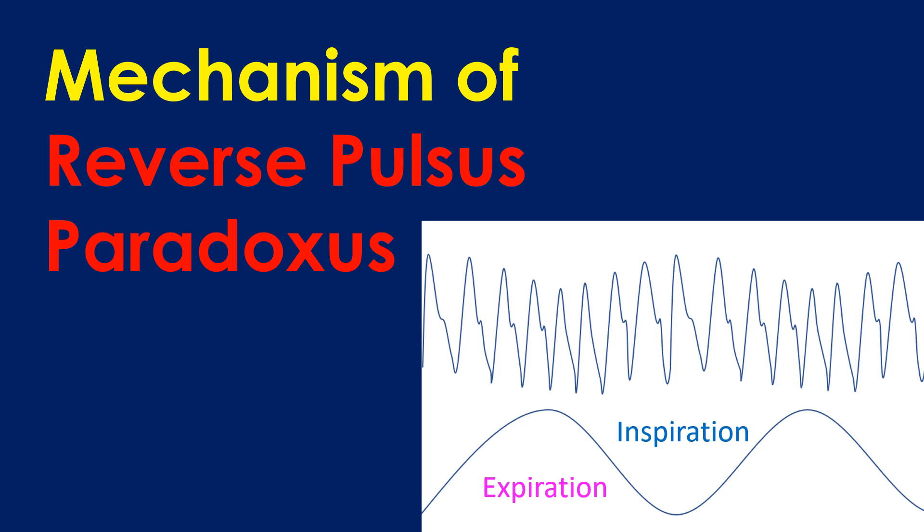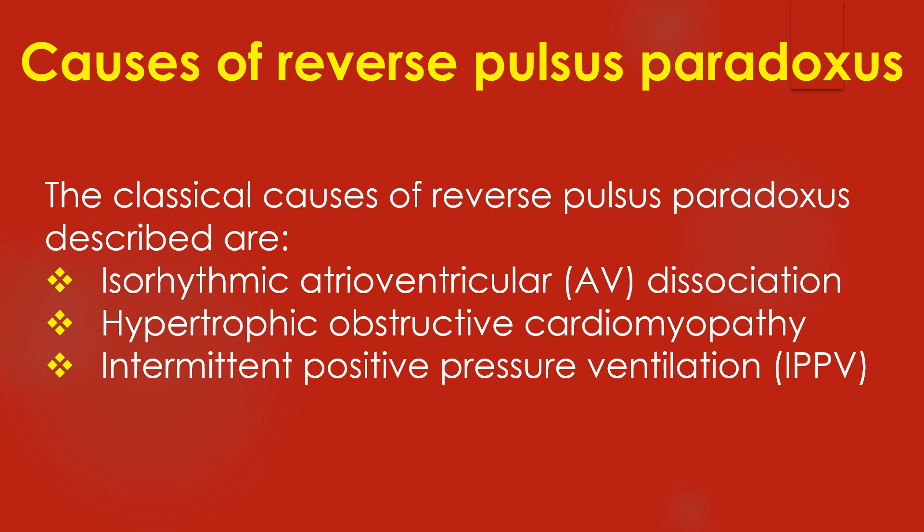Reverse pulsus paradoxus is an expiratory fall in pulse volume — the opposite of pulsus paradoxus. The classical causes of reverse pulsus paradoxus described are isoarrhythmic AV dissociation, hypertrophic obstructive cardiomyopathy, and intermittent positive pressure ventilation.